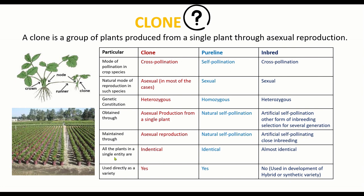Plants within a clone are all identical to one another. In pure lines they are all uniform, while inbreds are almost identical — the 'almost' indicating slight chances of cross-pollination between inbred lines. A clone can be directly used as a variety. A pure line can also be directly used as a variety once a homozygous line is obtained. Inbred lines are used especially as parents in hybridization programs or as component lines in synthetic variety production programs.